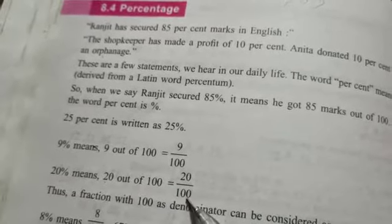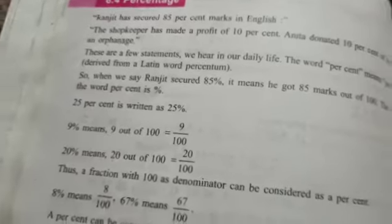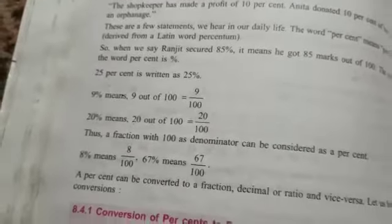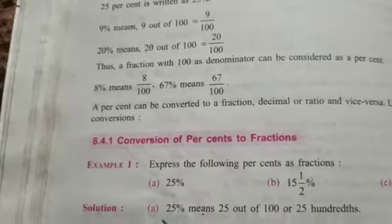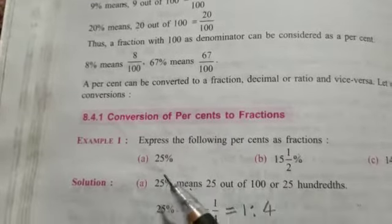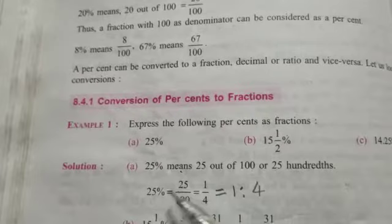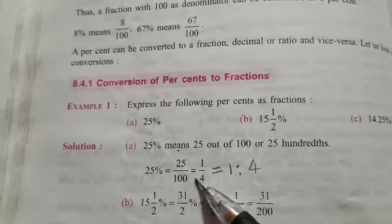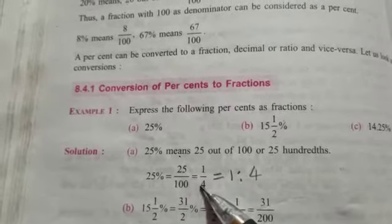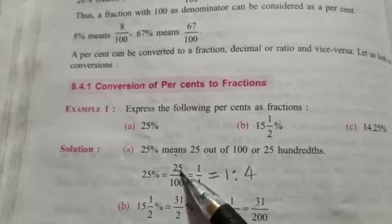To convert percent to fraction, we write the number without the percent sign, like 25%, and divide by 100. Then we simplify it - that will be 1/4. 25% means 1/4, because 25 goes into 100 four times.